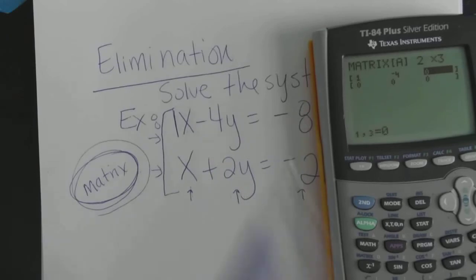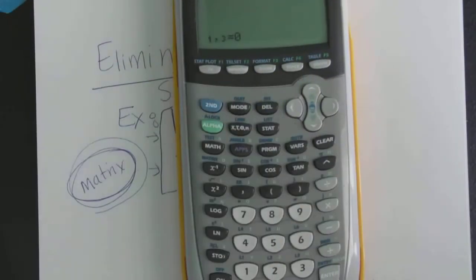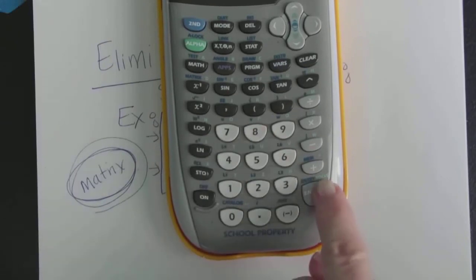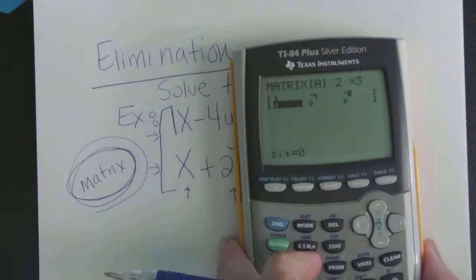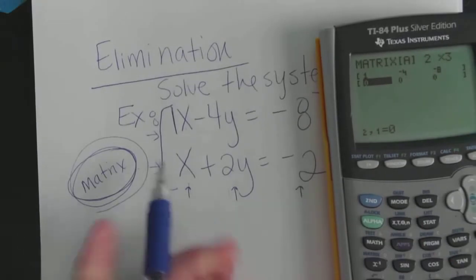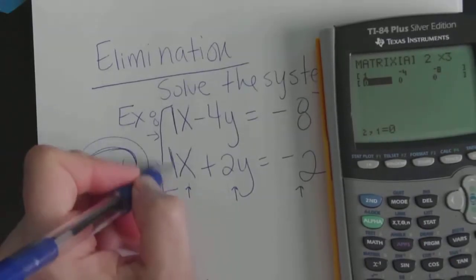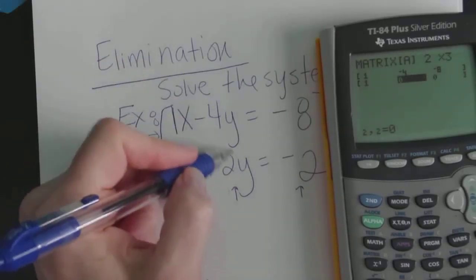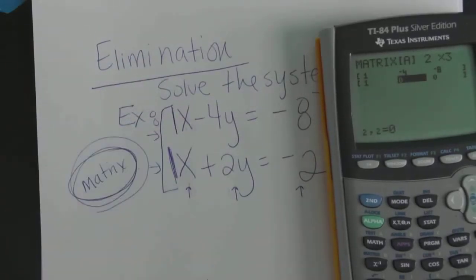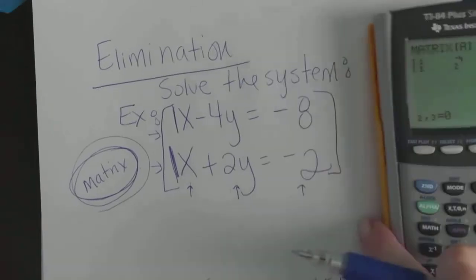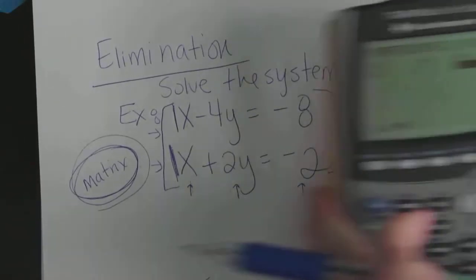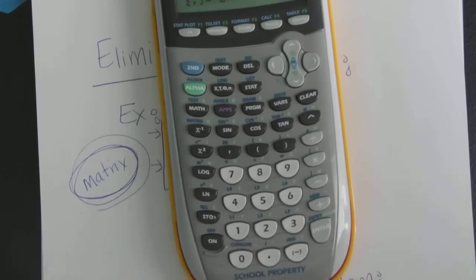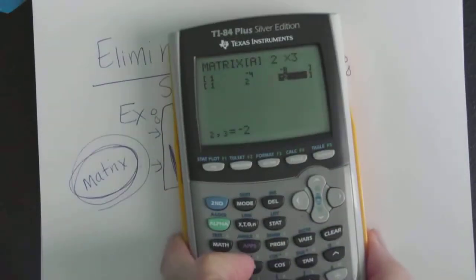And then it bumps you over to the far right where we're gonna type negative eight. So again negative at the bottom, negative eight enter. And then it brings you to the bottom row and we do the exact same thing over again. So we've got a one X, so we'll type a one. We've got a positive two Y, so we can just type a two. And finally we have a negative two. So make sure you're using a negative. Negative two enter.